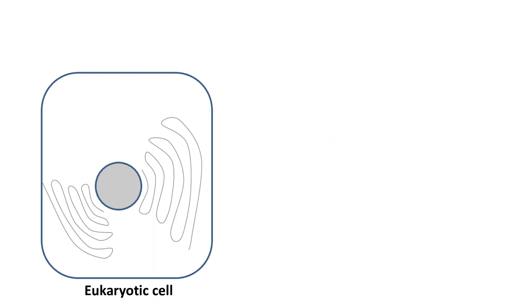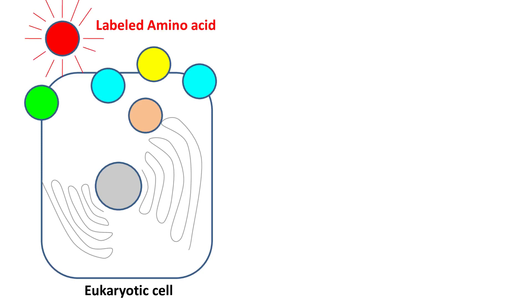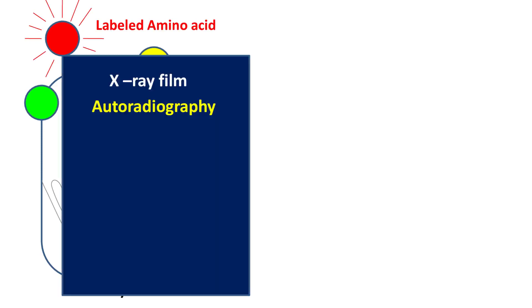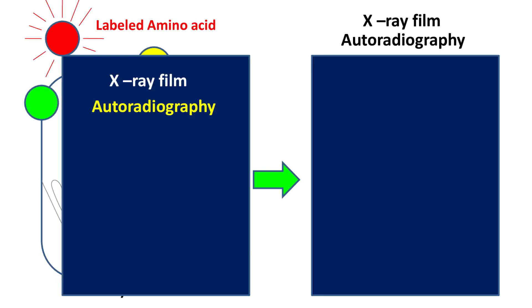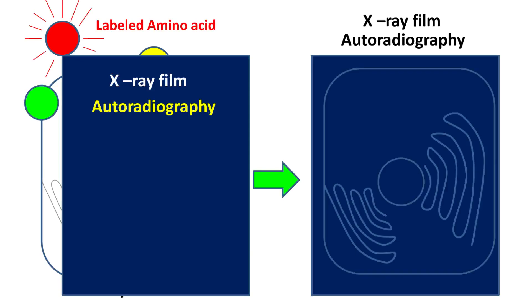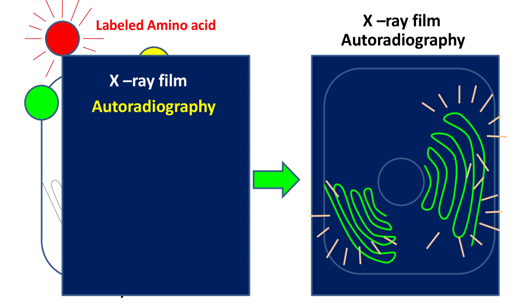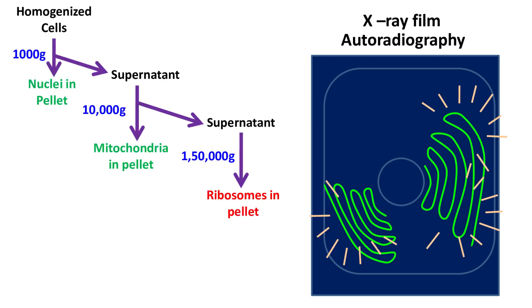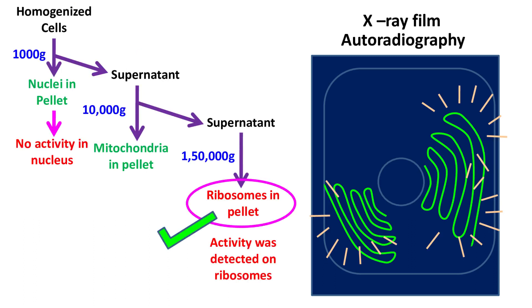The experiment was done by treating cells with labeled amino acids and detecting the activity by autoradiography. The autoradiography showed something amazing — the activity was detected on the endoplasmic reticulum and not on the nucleus. They further fractionated the cells by ultracentrifugation and found that the activity of labeled amino acids was detected on the ribosomes.